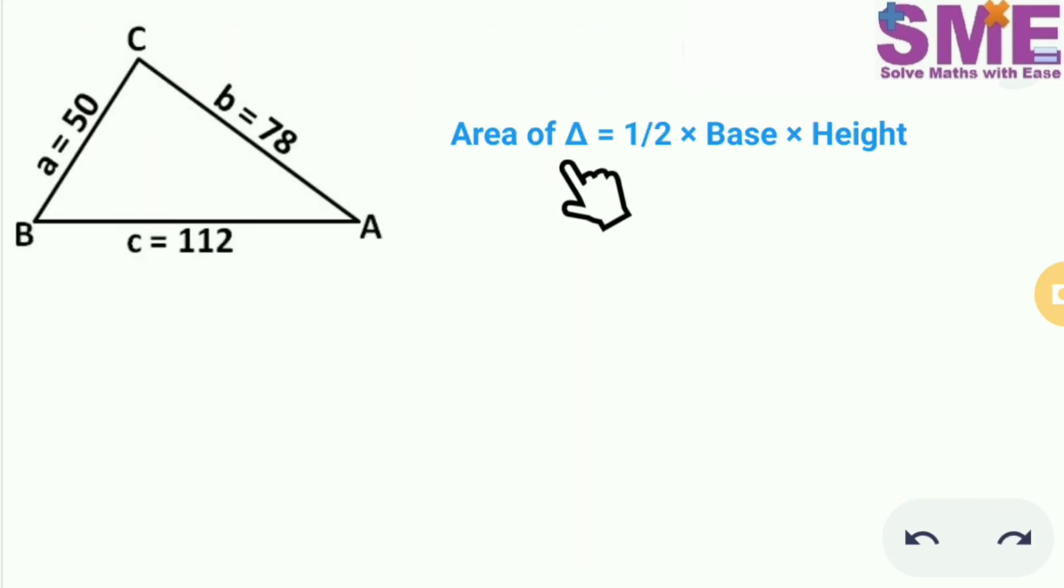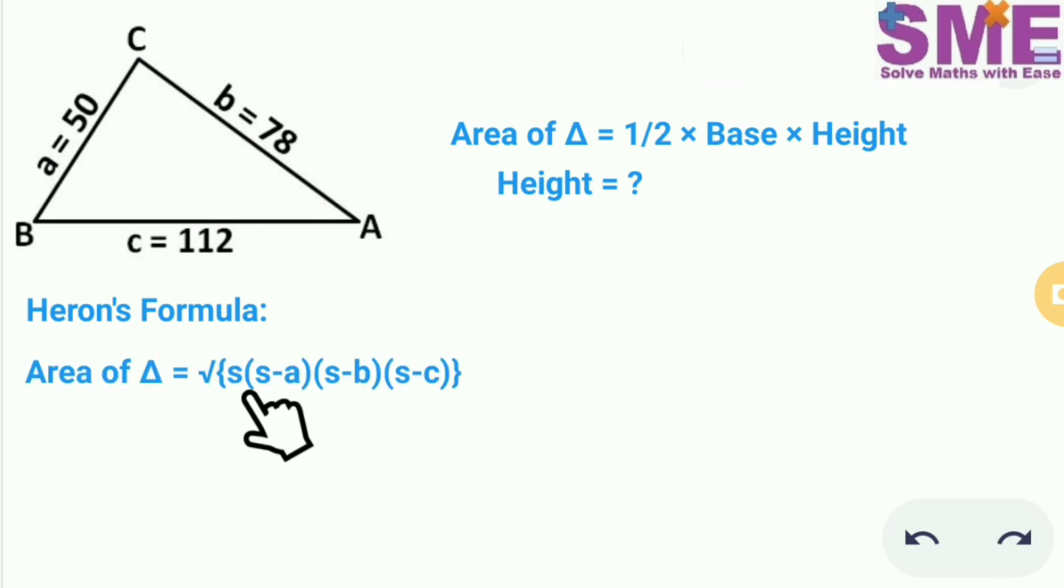Now we know that the area of the triangle is equal to half multiplied by base multiplied by height. But here we don't know the height of this triangle. So in this case we use the Heron's formula which says that the area of the triangle is equal to root of s multiplied by s minus a multiplied by s minus b multiplied by s minus c.